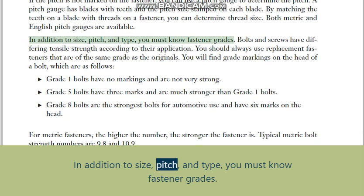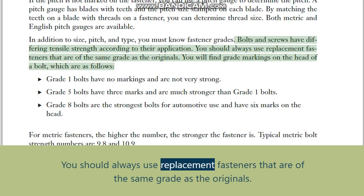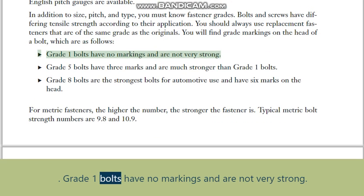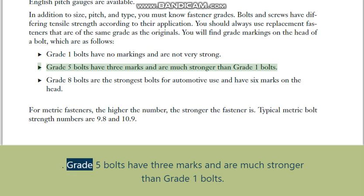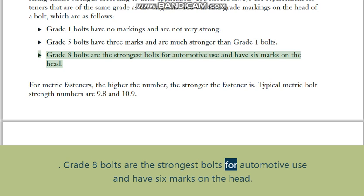In addition to size, pitch, and type, you must know fastener grades. Bolts and screws have differing tensile strength according to their application. You should always use replacement fasteners that are of the same grade as the originals. Grade markings are found on the head of a bolt: grade one bolts have no markings and are not very strong; grade five bolts have three marks and are much stronger than grade one bolts; grade eight bolts are the strongest for automotive use and have six marks on the head.